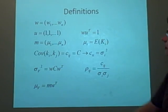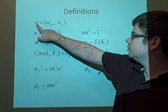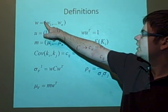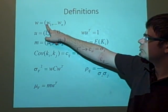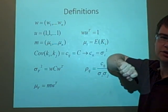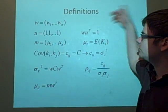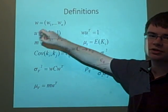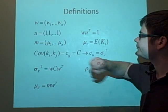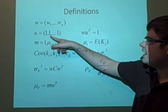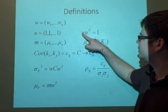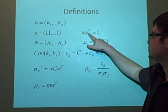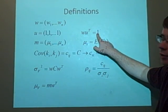We're now going to denote W as a vector with n different securities, so you'll have W1, W2, all up to Wn. U is going to be a unit vector with n ones, so that we can multiply W times the unit vector transpose, and that's going to be equal to 1.